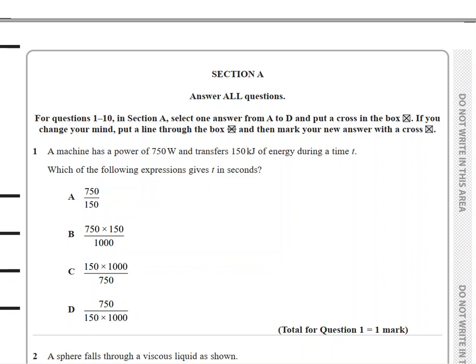When you look at this question, the very first thing that should pop up in your mind is the equation: power equals energy by time. If you make time the subject of the equation, that makes energy by power. Energy is given in kilojoules; you have to convert this to joules and divide by 750 to get the expression for time.